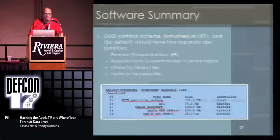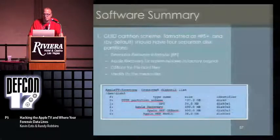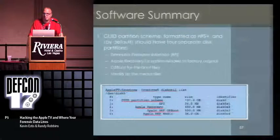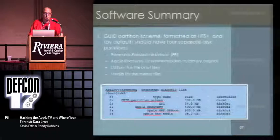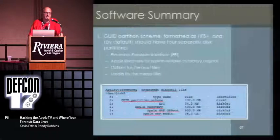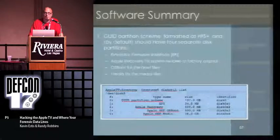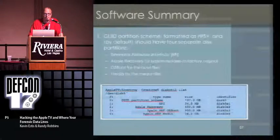From a software summary perspective, it does have a GUID partition scheme. It's formatted as HFS Plus and by default should have four separate disk partitions. The first one is the Extensible Firmware Interface — that's where all your data is stored so that your hardware knows what to do. The second one, of note, is a recovery partition. That recovery partition stores an unmodified copy of the original version of Apple TV OS installed by the factory, so you can always go back and recover from the hard drive. It has an OS boot partition for boot files and a media partition for media files.